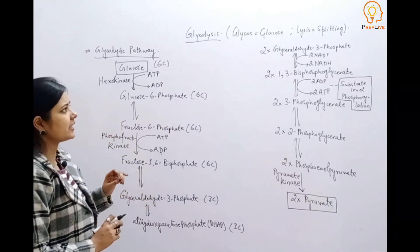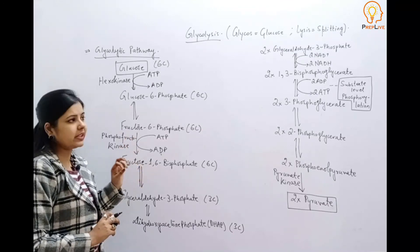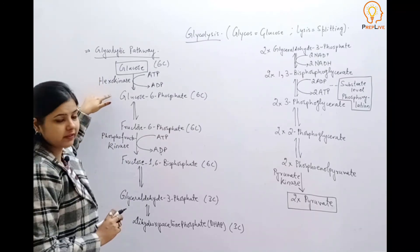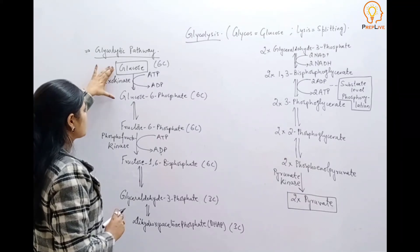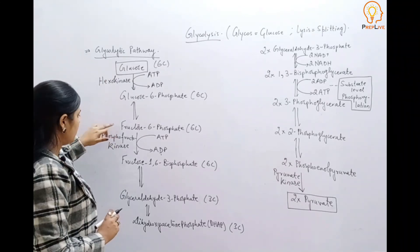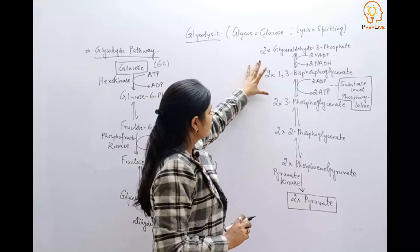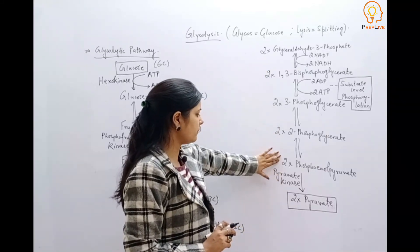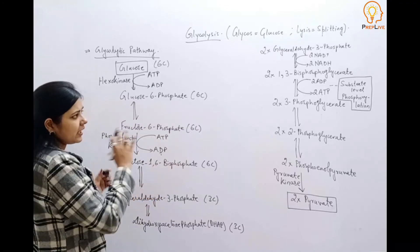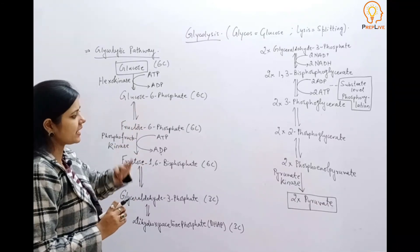In all these steps, one remarkable thing is that all reactions are reversible except three reactions which are irreversibly catalyzed. One is the hexokinase-catalyzed conversion of glucose into glucose-6-phosphate. The second is the phosphofructokinase-catalyzed conversion of fructose-6-phosphate into fructose-1,6-bisphosphate. And the third is the conversion of two molecules of phosphoenolpyruvate into pyruvic acid with the help of enzyme pyruvate kinase.